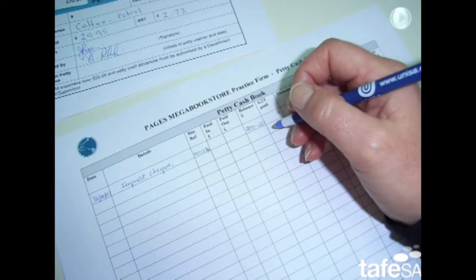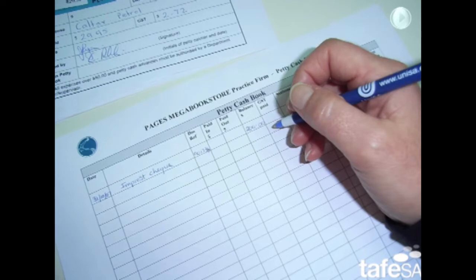When the petty cash tin is first set up, there is an amount of money that is put into it. This is called the impressed or advance. As you can see here, the $200 has been placed in the balance column and should also be written in the paid in column.